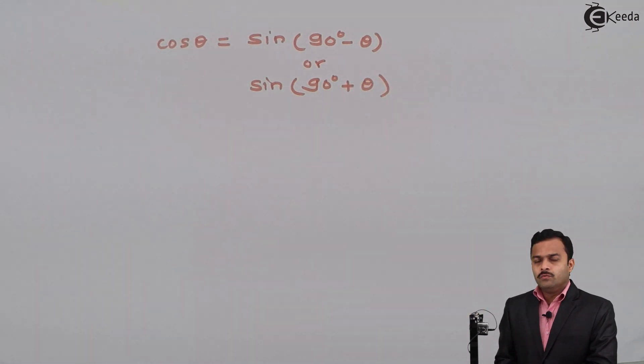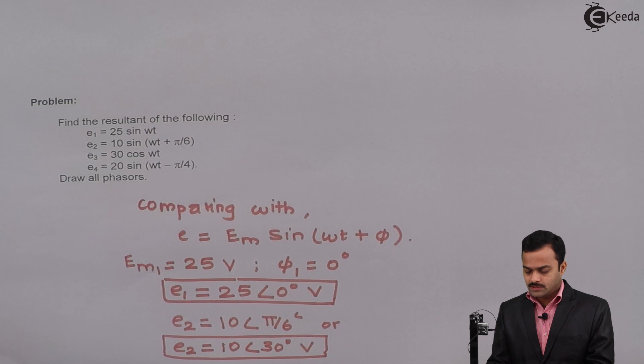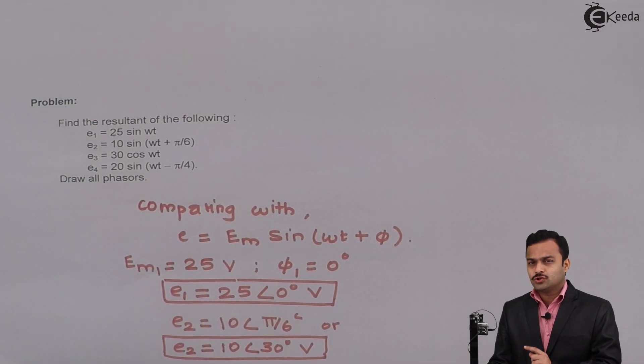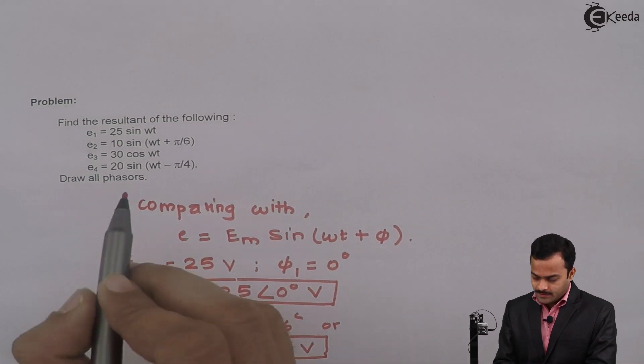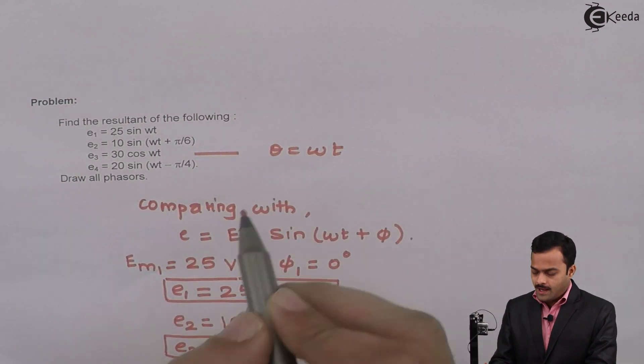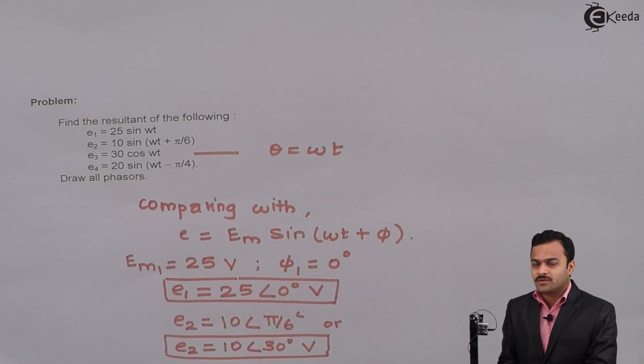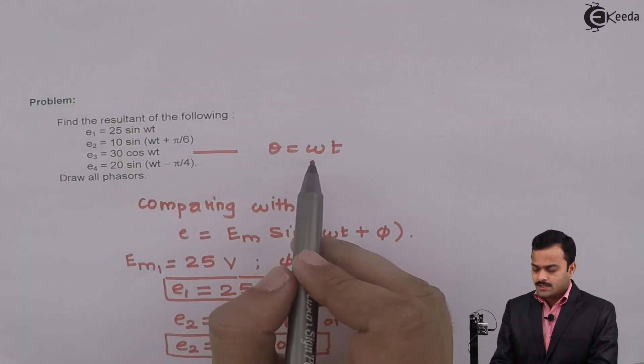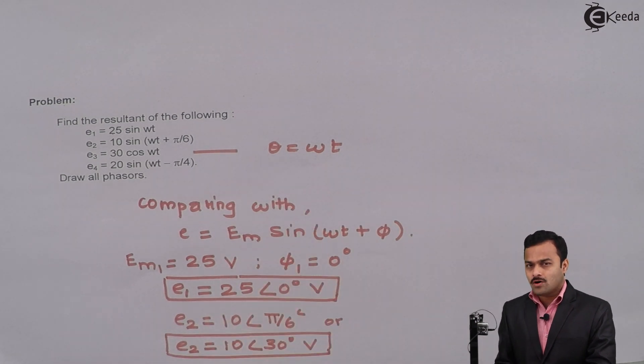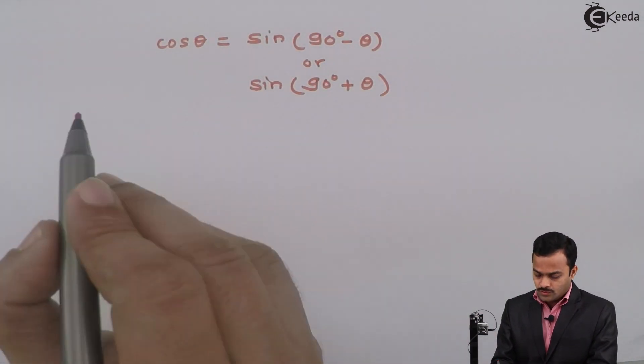Which one we will take? How to decide? Whenever I use a formula for cosine to sine conversion, I have to make sure that θ should remain positive. Why? Because θ means ωt over here, and this is a frequency, so in a standard equation ωt always remains positive. So whenever I am to convert cosine into sine, I have to make sure that this ωt term should remain positive, hence I will use the second formula.